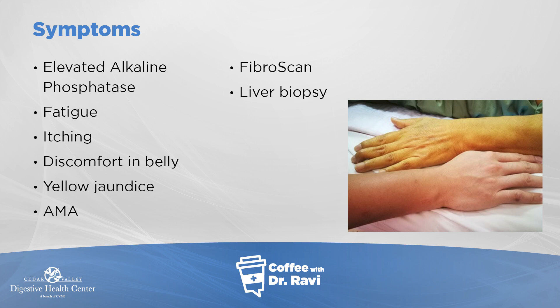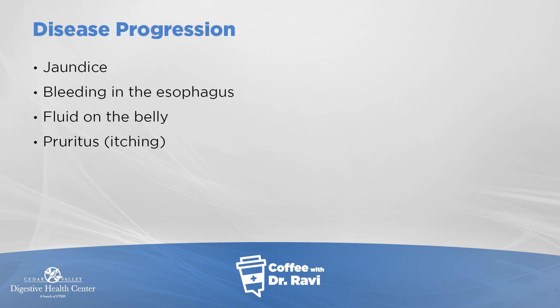If you're looking at your blood chemistry panel — and I think everybody should get one — there's a test called alkaline phosphatase that goes up in this condition. There's also an antibody test called AMA which can confirm the diagnosis. Sometimes we do a scan called a fibroscan, which is like an ultrasound that tells us if there's any liver damage. A combination of these blood tests and the fibroscan can help diagnose it, and typically we may also need to do a liver biopsy. If progression happens, the liver can shut down, leading to jaundice, bleeding in the esophagus, and fluid in the belly.